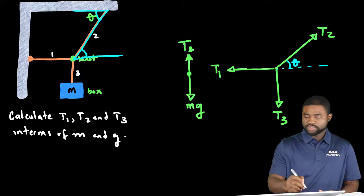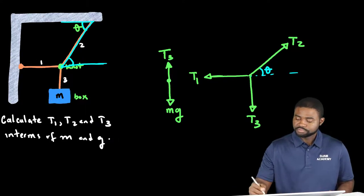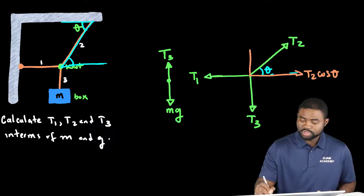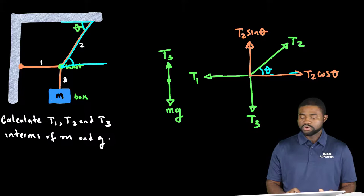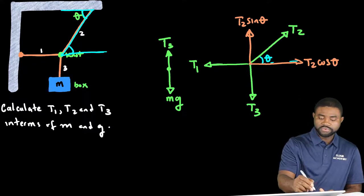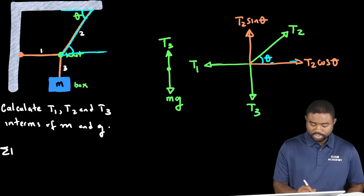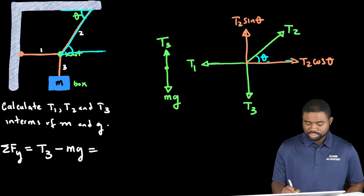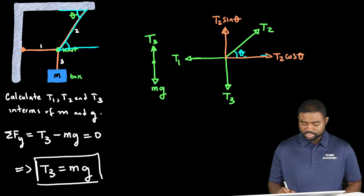What that implies is that we can resolve T2 into two components. You will have here T2 cosine theta and T2 sine theta. Now the next step is for us to apply Newton's second law for both objects. So let's do the summation of forces along the y direction. You will have T3 minus mg which is equal to zero. This would mean that T3 is just simply equal to mg. So we've gotten the value for T3.